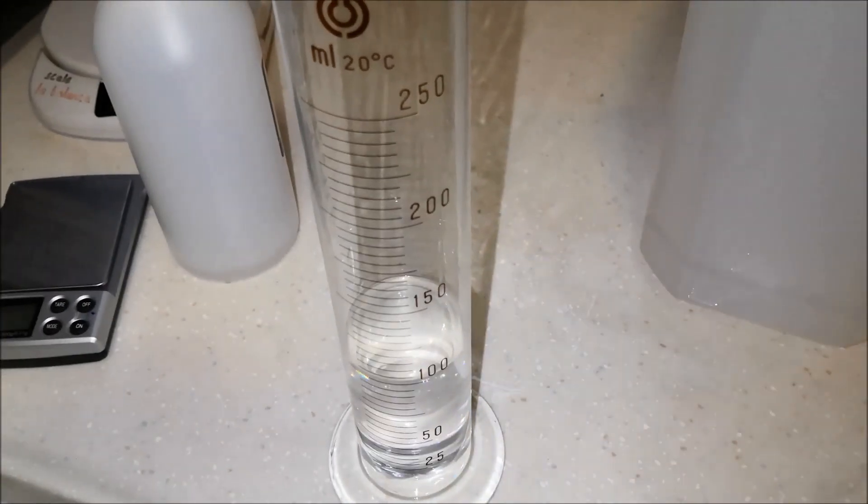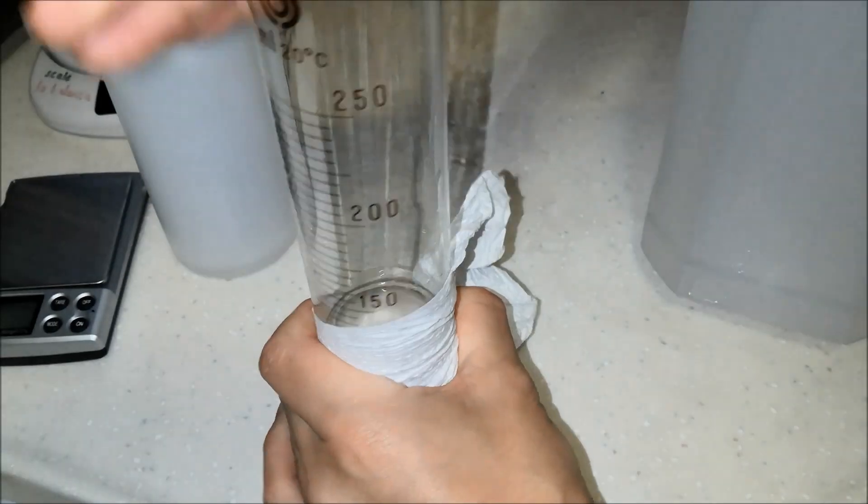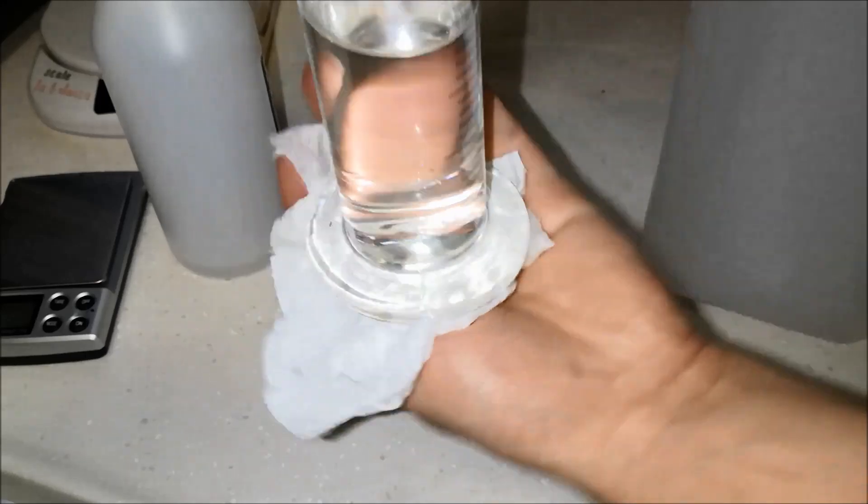Okay. So we've got our 100 mls of isopropyl alcohol. I spilled a little bit on the outside of this. So I'm going to wipe off the excess that I spilled on the outside. Because I don't want that to affect my measurements.